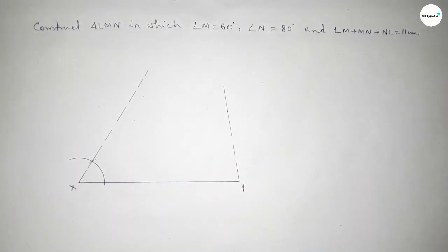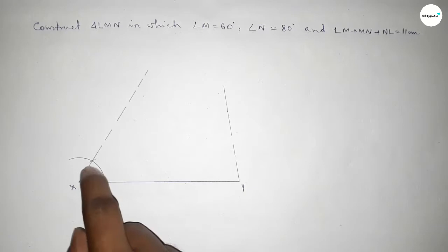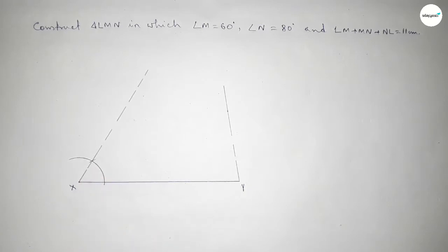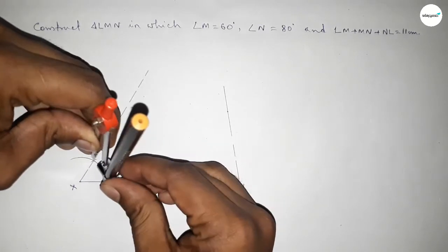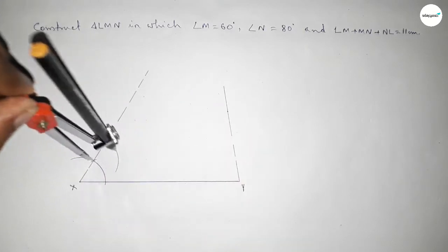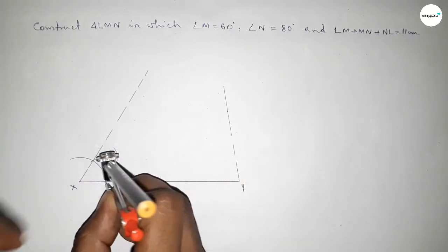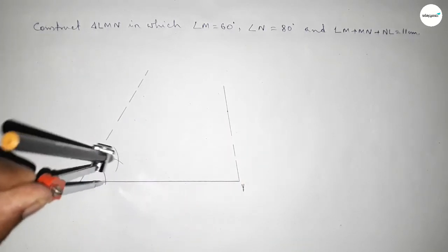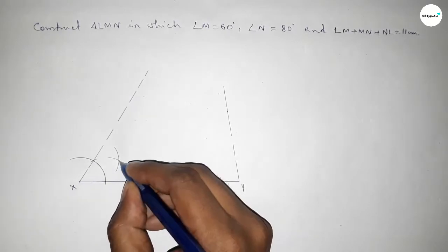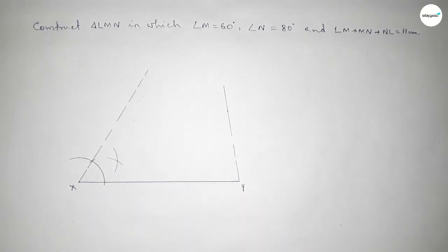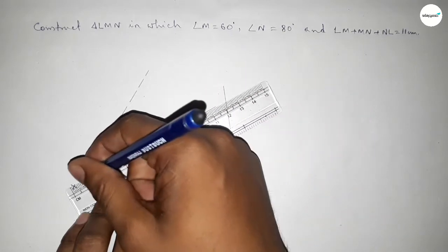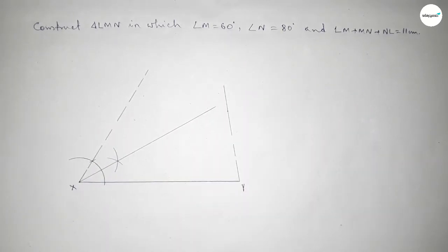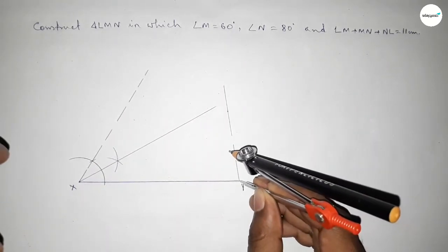Now we have to bisect the 60 degree angle at X. Putting the compass here and taking greater than half of the angle, drawing an arc. With the same length, cutting another arc so both curves intersect at a point. Joining this line bisects the 60 degree angle.